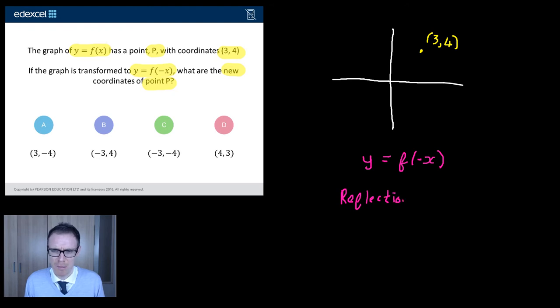But what axis is it going to be a reflection in? Well, if it's inside the brackets, it's reflection this way. It's reflection in the y-axis. It flips it to the other side of the y-axis.